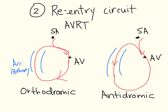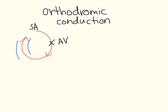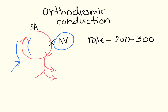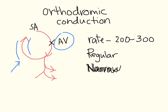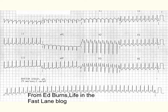In orthodromic conduction, impulses are still traveling down the AV node in the correct way, therefore reaching the bundle branches correctly. The rate is fast since impulses travel quickly between the AV node and the accessory pathway. The QRS complexes are regular. Since the impulses go down the AV node the normal way, the complexes should be narrow, unless there is a pre-existing bundle branch block. The ECG shows a fast, regular, and narrow complex.